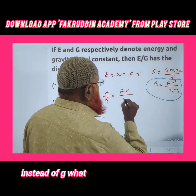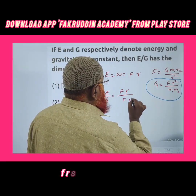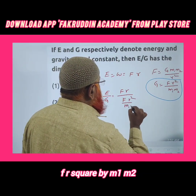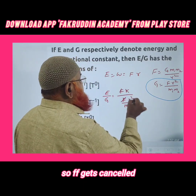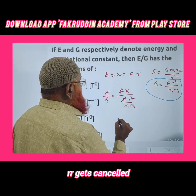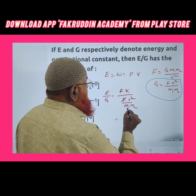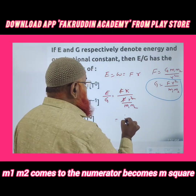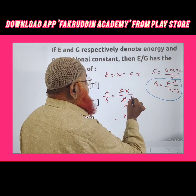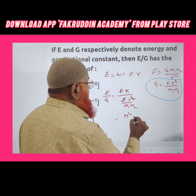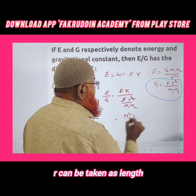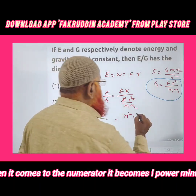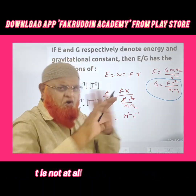So we have F·R² divided by M1·M2. F gets cancelled, R gets cancelled. What is left: M1·M2 comes to the numerator and becomes M squared. R is left here; when it comes to the numerator it becomes L to the power minus one.